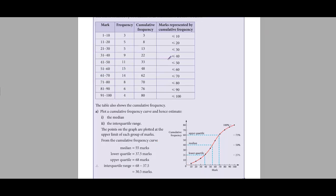Now, how many students got 40 marks or less? Marks are on the x-axis, so we start from 40 on the x-axis, go up to hit the graph, then come across to the y-axis. The value is 22. So 22 students got 40 marks or less, which you can also confirm from the table.